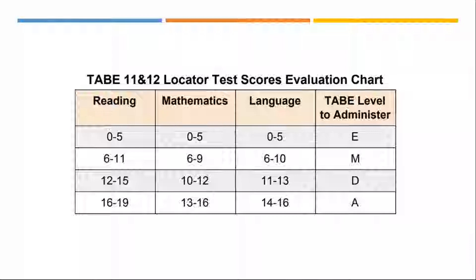Each locator has 16 questions, and the reading locator contains three two-part questions. A chart shows the correlation of the number correct on the locator to the appropriate test level. For example, if a customer gets five correct on the reading locator, you administer the Level E test. If it's a five, don't think it's close to a six — the test was normed with reliability, so you administer the Level E pre-test and post-test accordingly.